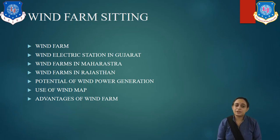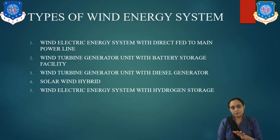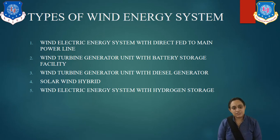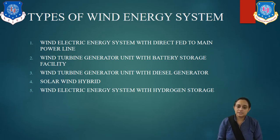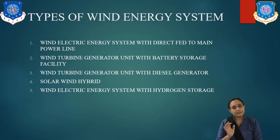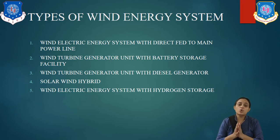Now let us look at the five types of wind energy systems. First: wind electrical energy system with direct feed to the main power line — whatever energy is generated is directly fed into the main electrical supply line. This is used where low winds are flowing. Second: wind turbine generator unit with battery storage facility — the battery storage system includes a wind power generator, rectifier, converter, and battery containers. Where there are unfavorable winds, the batteries release energy to the load.